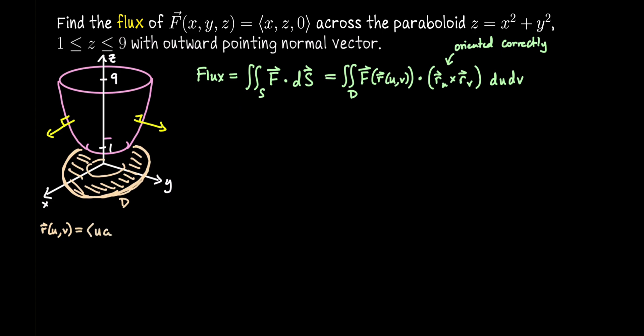So x will be u cosine v, y will be u sine v, and then given that z is x² + y², which is going to be u².